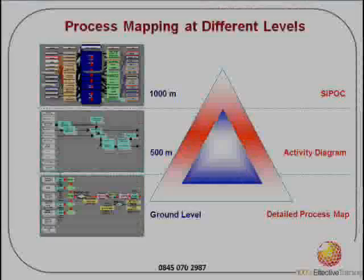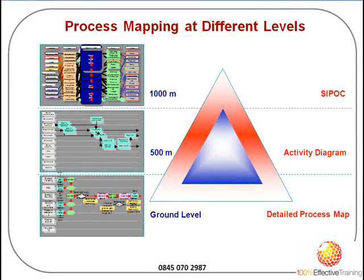There are different levels of process mapping. At the highest level, we would do something called the SIPOC, which identifies on one page all the key process steps, inputs, outputs, suppliers, and customers. So it helps us identify where we potentially have problems at a more strategic level.